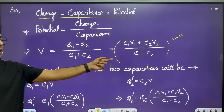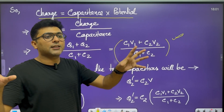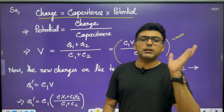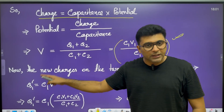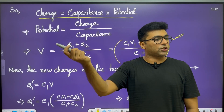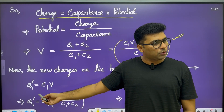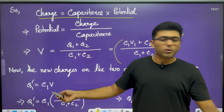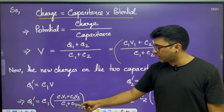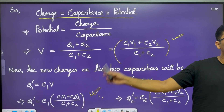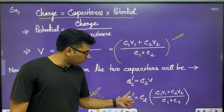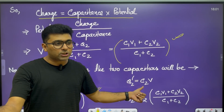The new charges on the two capacitors after combination: capacitor 1 initially had charge Q1, but after combination the new charge Q1 dash equals C1 into common potential V. Similarly for the second capacitor, Q2 dash equals C2 into common potential V.